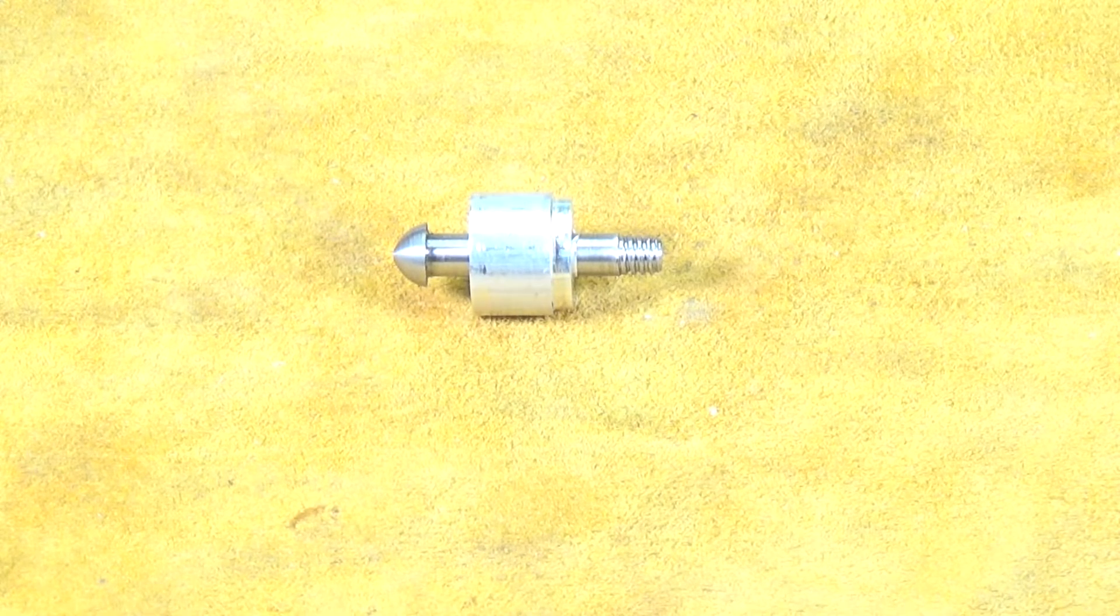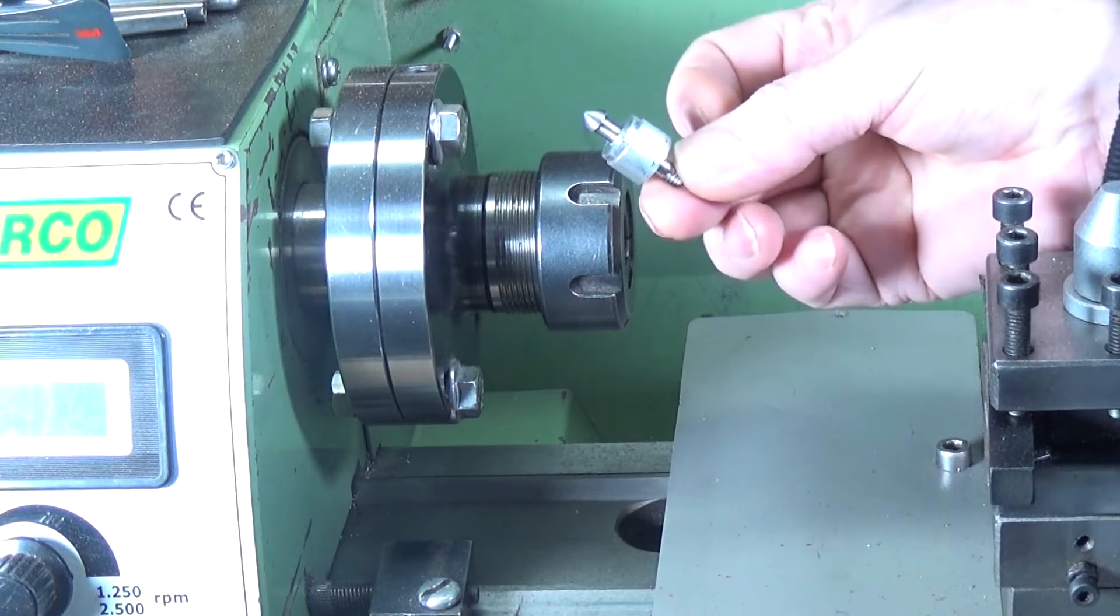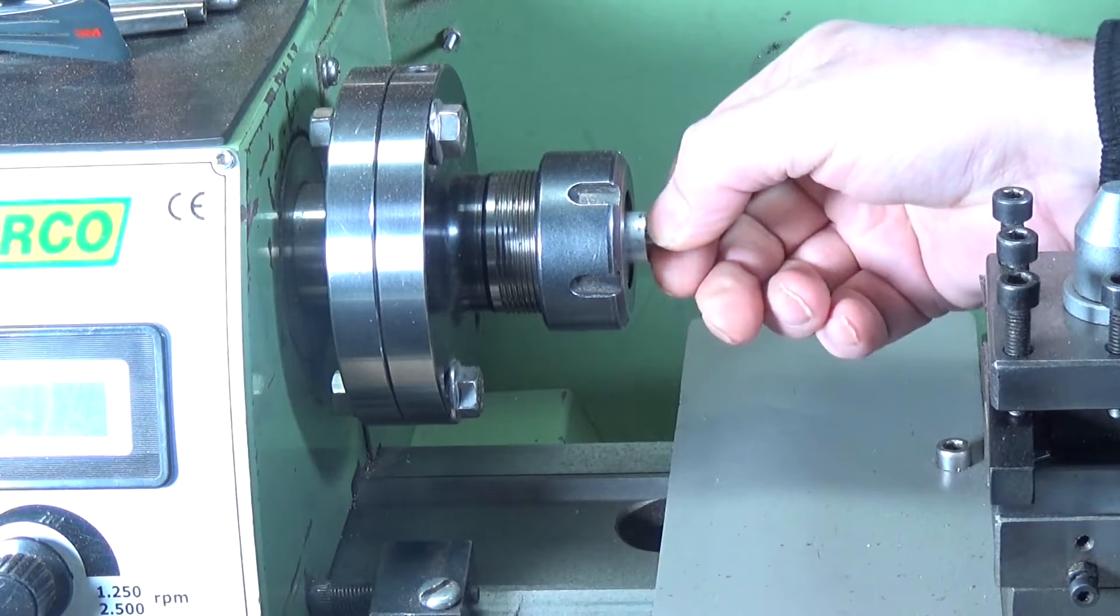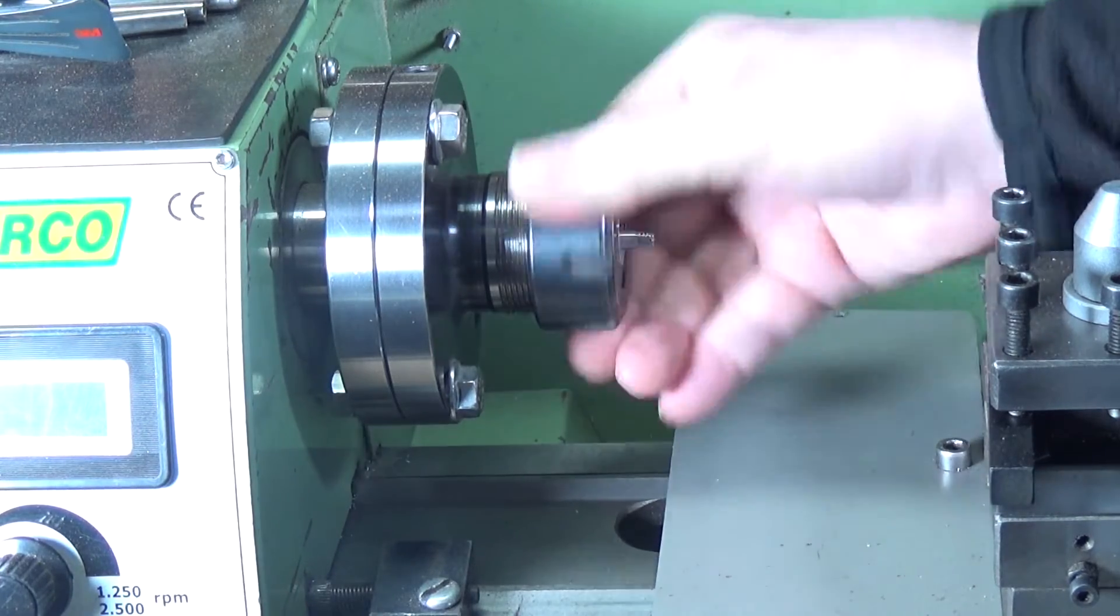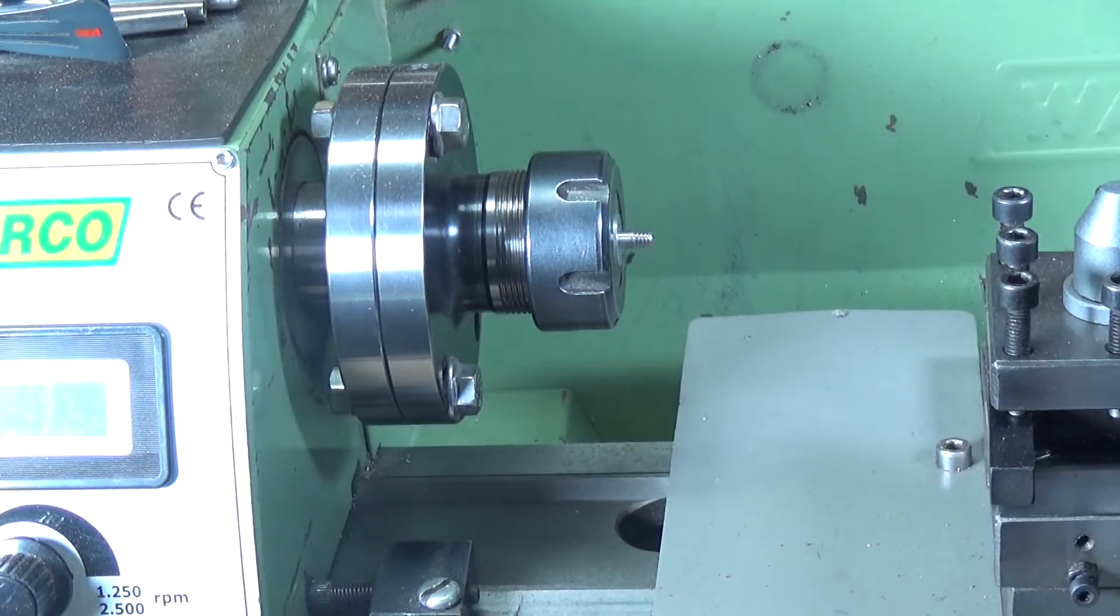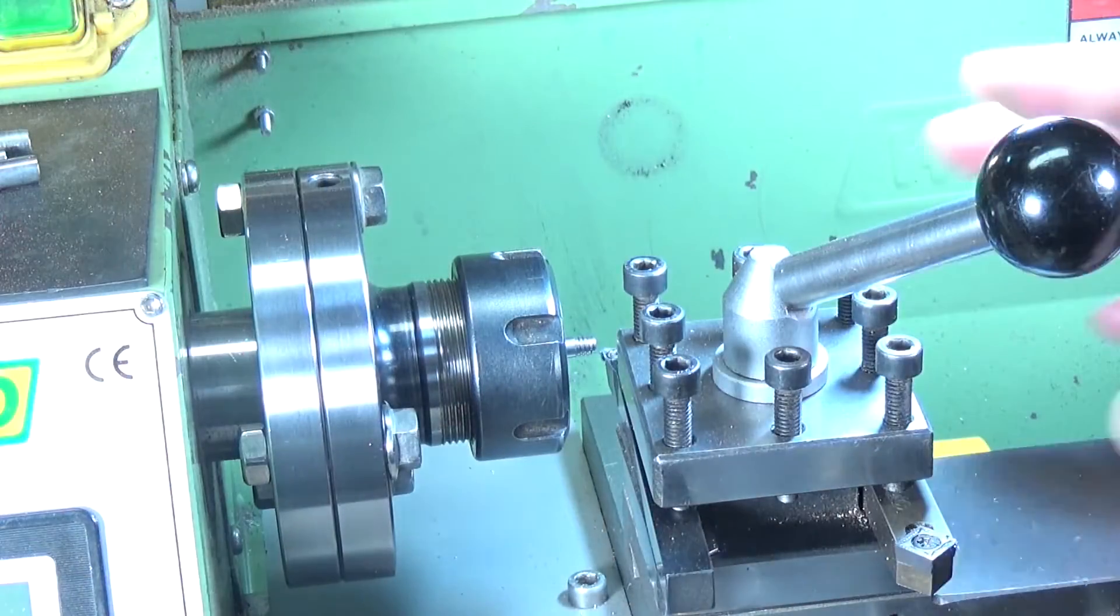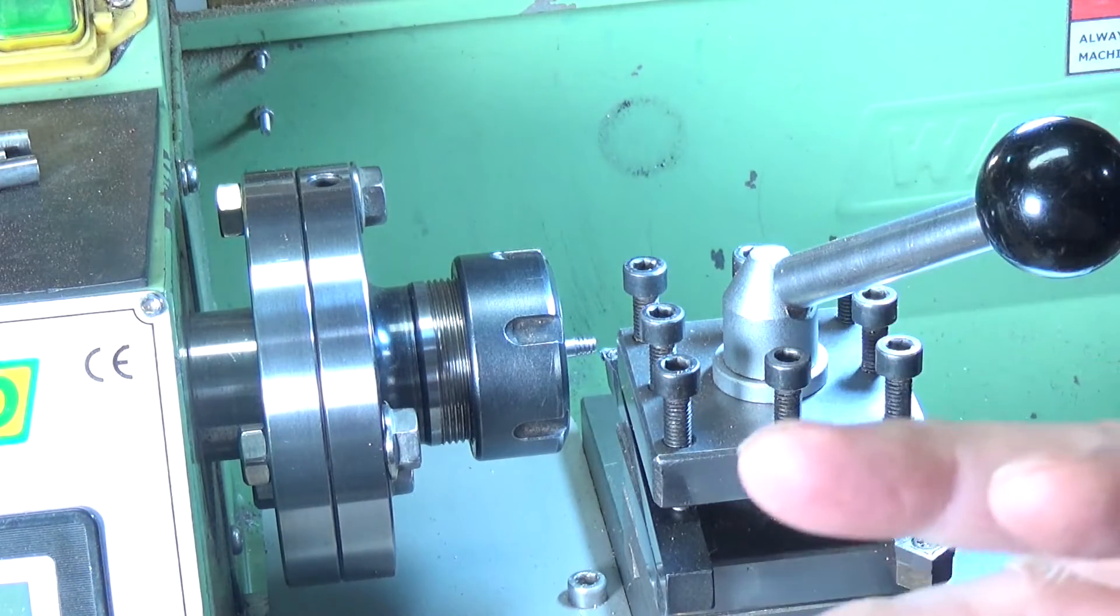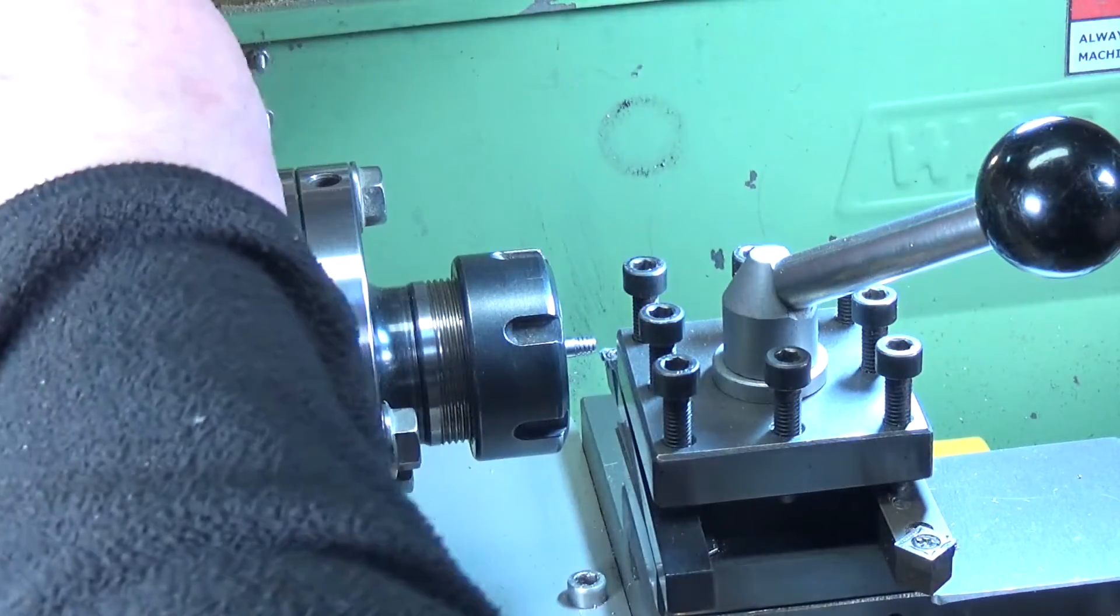We'll pop the now Loctited bolt in its temporary mandrel, stick that into the lathe and get it tightened up. Then we can turn down the threads. I've only got to take 16 thou off this, so it's only going to be a very light cut. I'll probably do it in a couple of cuts, but hopefully the Loctite will hold.